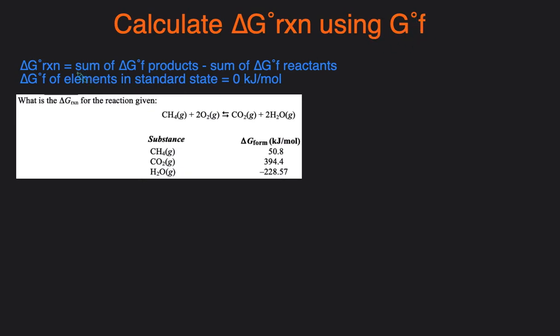To do that you use delta G of the reaction equals the sum of delta G formation of products minus the sum of delta G formation of reactants.